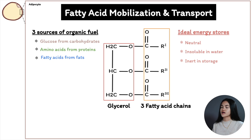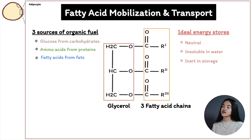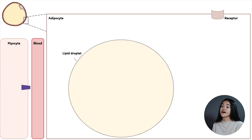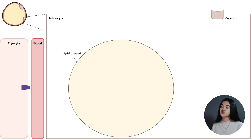When we oxidize fatty acids we can yield energy, similar to how we harness energy from glucose oxidation and amino acids — all of these pathways connect at oxidative phosphorylation when we're producing ATP. Before we oxidize fatty acids, we first need to release them. Lipids are stored in adipocytes, in fat cells, within lipid droplets. In order to release the fatty acids and metabolize the triacylglycerols, hormones need to trigger this process.